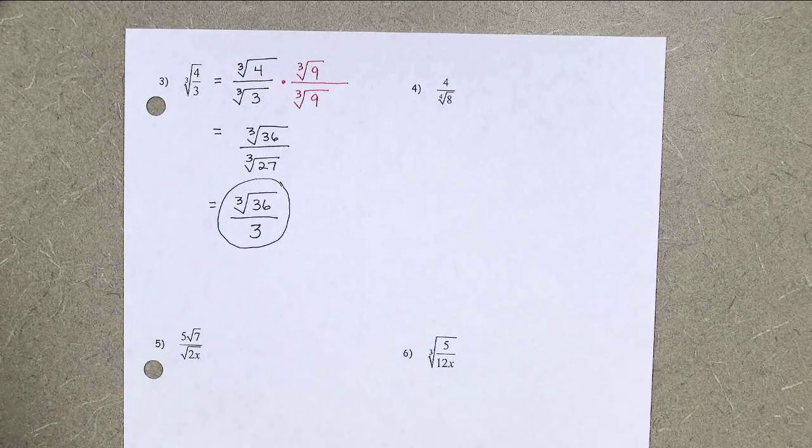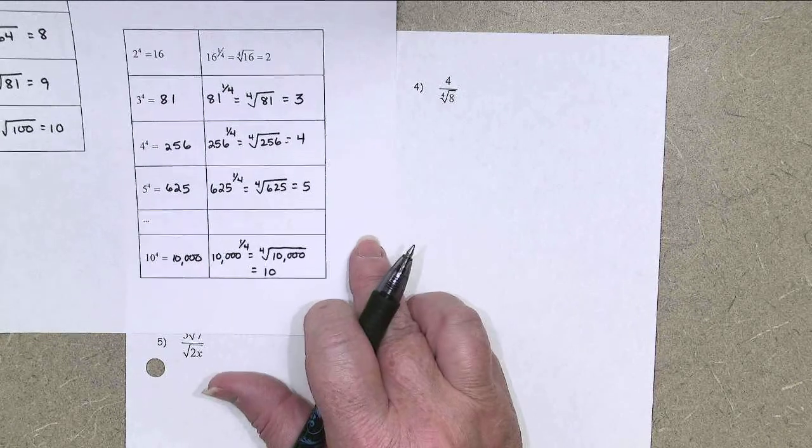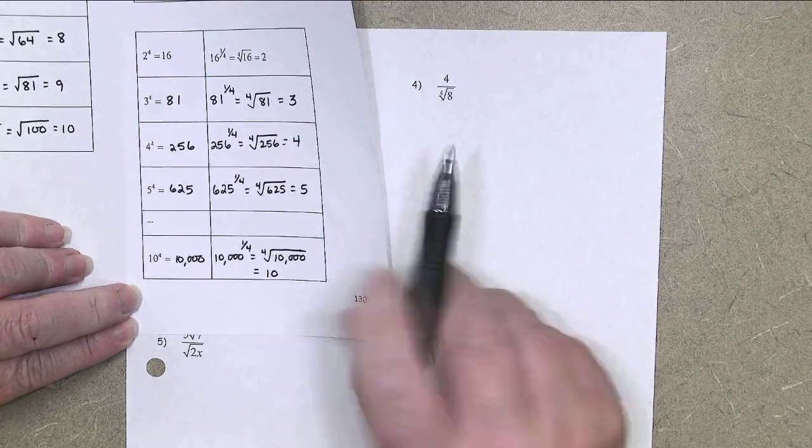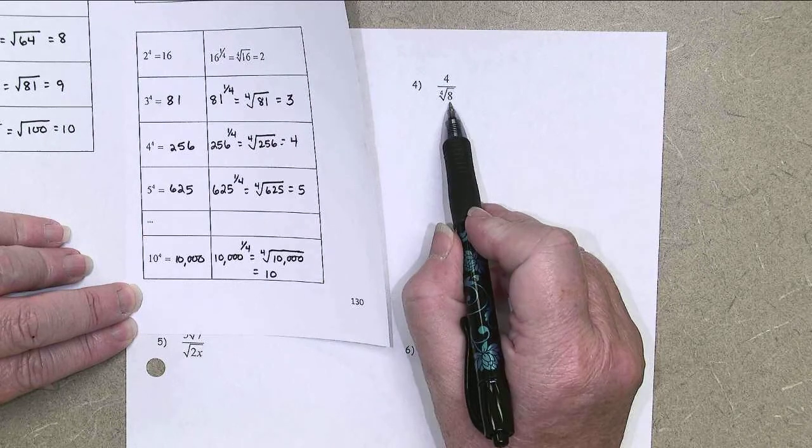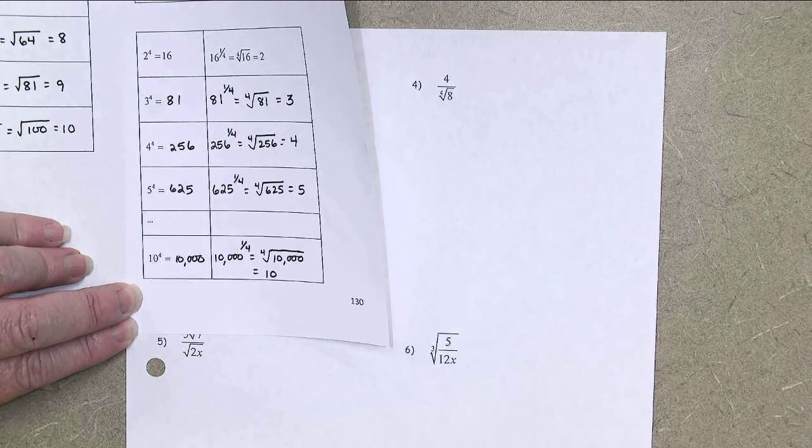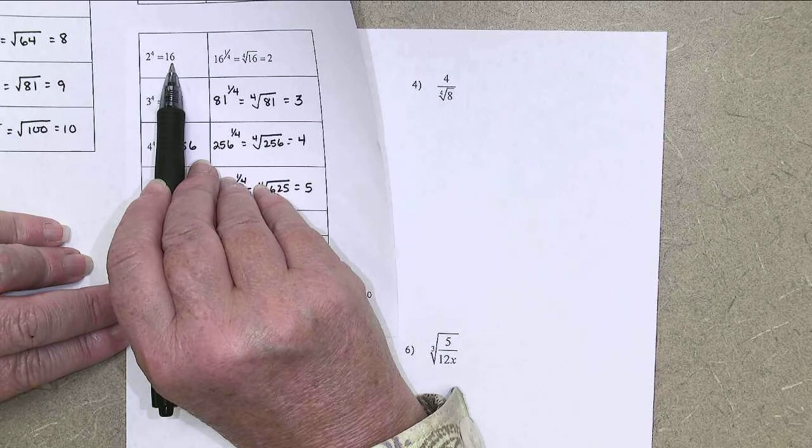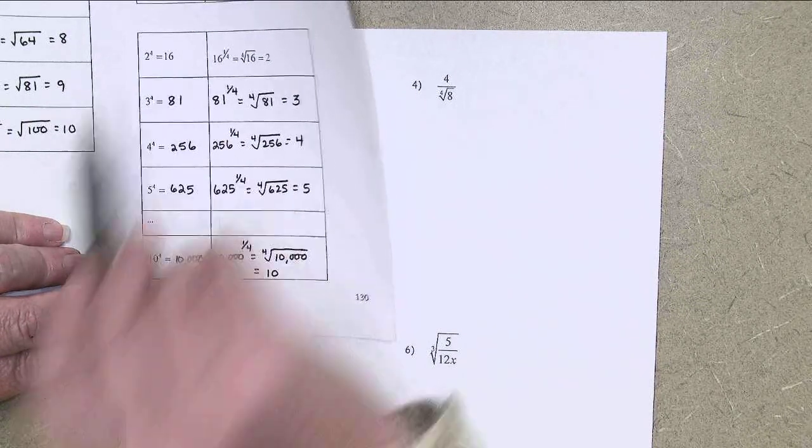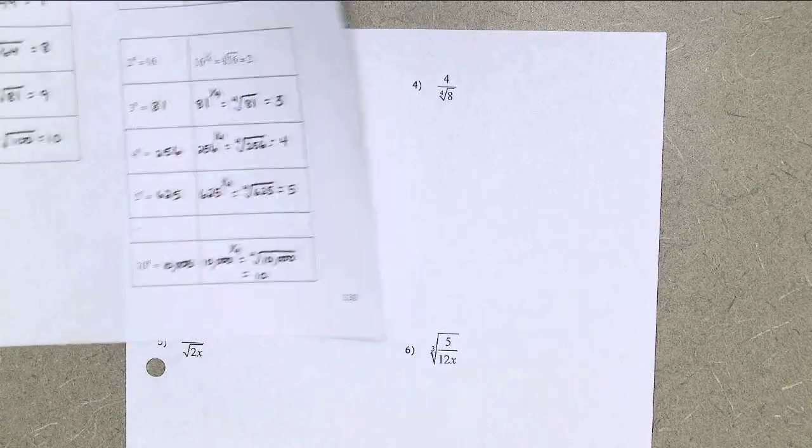Instead, I'm going to look at my 4th powers list. And I'm going to say, what could I turn that 8 into so it will have a perfect 4th power? And I'm going to find it right away. I could multiply by 2 and make that a 16, which is 2 to the 4th. So let's do it.